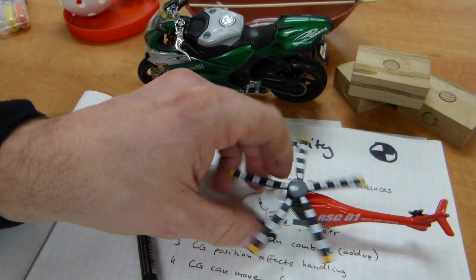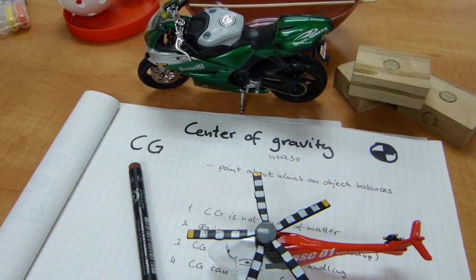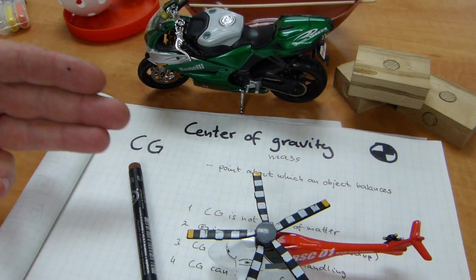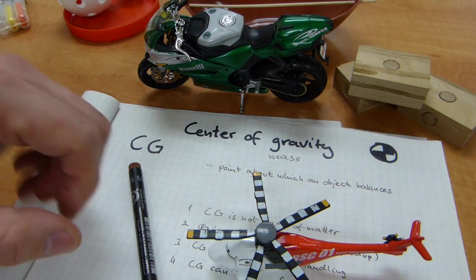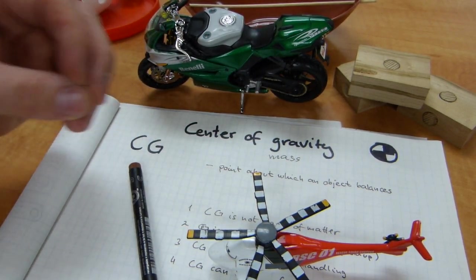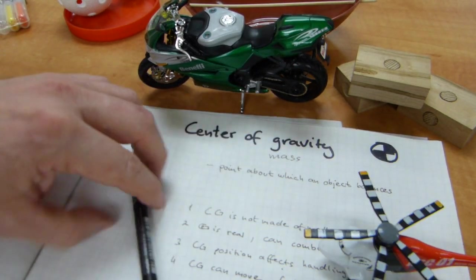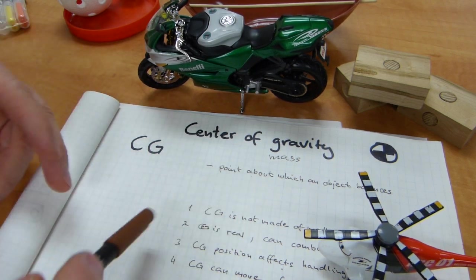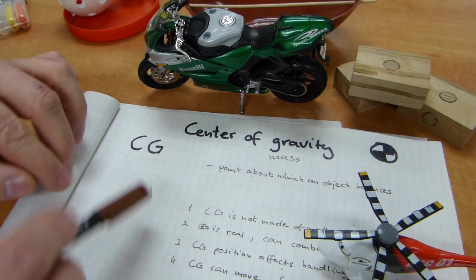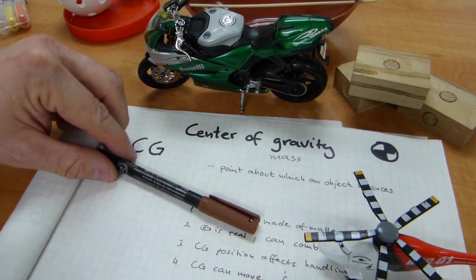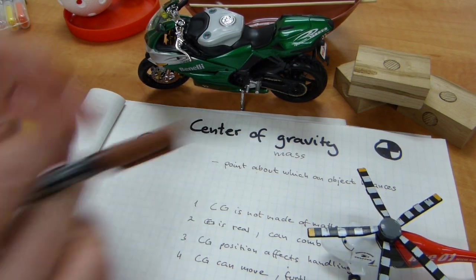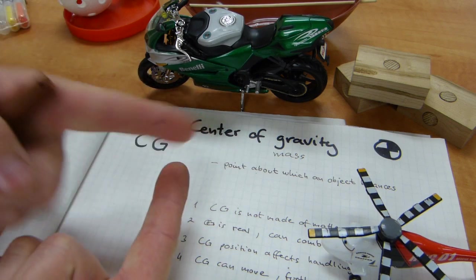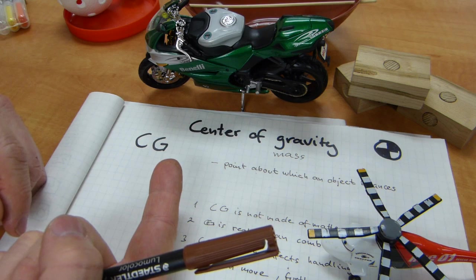One good working definition for center of gravity is a point at which gravity seems to act or acts on an object. But another working one that I'm going to be using often is this: center of gravity is a point at which an object balances. This is really easy to conceptualize and envision with just a paper and a pencil. If I drew a square here, or a rectangle, or any kind of two-dimensional polygon, whatever, regular, or any kind of polygon on the sheet of paper, let's go with a rectangle. If I drew its diagonals both ways, where the diagonals intersect, that's where its center of gravity is.